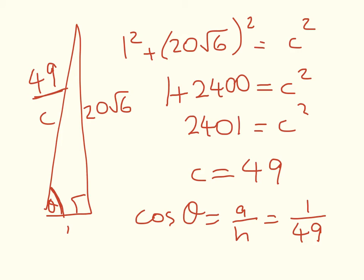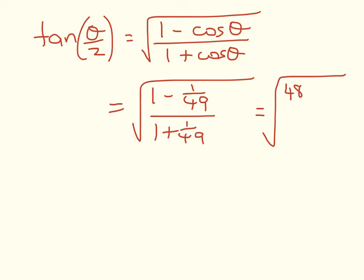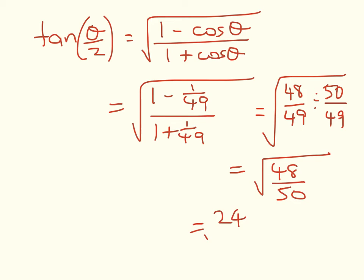So we've got tan(θ/2) is equal to the square root of (1 - cos θ)/(1 + cos θ), which works out to be (1 - 1/49)/(1 + 1/49), or (48/49)/(50/49), which is 48/50, or the square root of 24/25, which looks far nicer if we take out our perfect squares and we write that as 2√6/5. So we're starting to head somewhere quite good because we've got tan(θ/2).